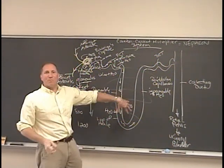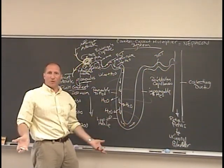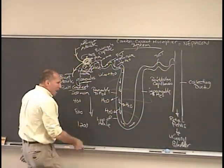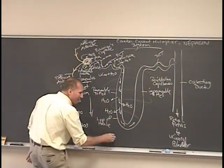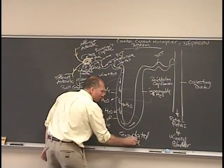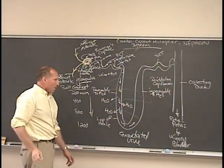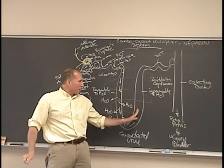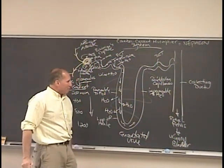And it gets picked up by the peritubular capillaries, which is very important. So by the time it makes the turn of the loop of Henle, there is a concentrated urine that actually is occurring. The urine becomes much more concentrated as it makes this loop and makes this turn.